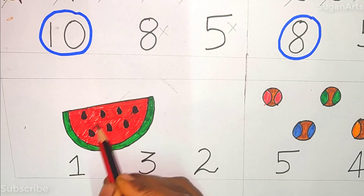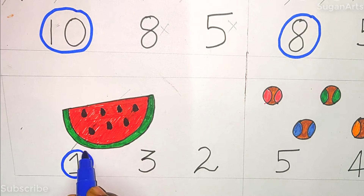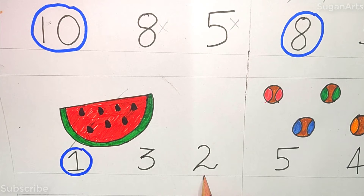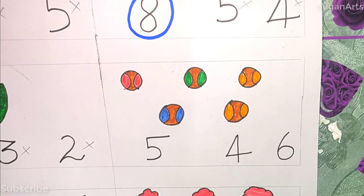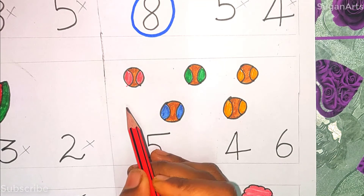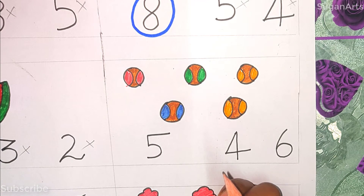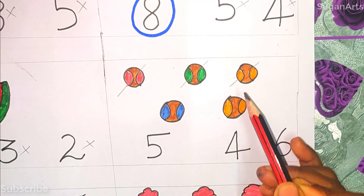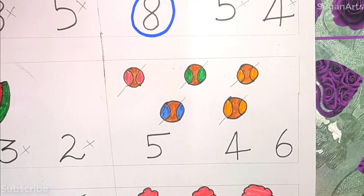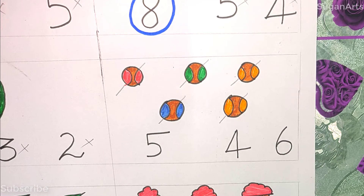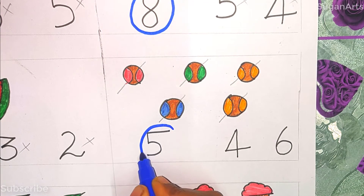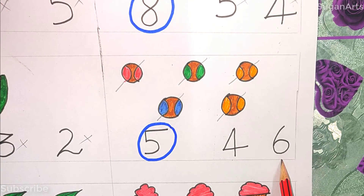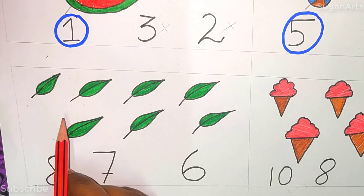Next object is a ball. Can we count how many balls there are? One, two, three, four, and five. So we have five balls here, so the answer is five. I'm going to circle it. Four and six are wrong.